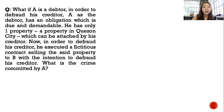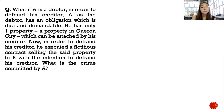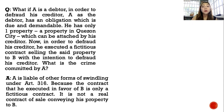Example: A is a debtor with an obligation that is due and demandable. He has only one property in Pasay City, which can be attached by his creditor. To defraud his creditor, A executed a fictitious contract purportedly selling the property to B. What crime did A commit? A is liable for other forms of swindling under Article 316 because the contract he executed in favor of B is only fictitious — it is not a real contract of sale conveying his property to B.